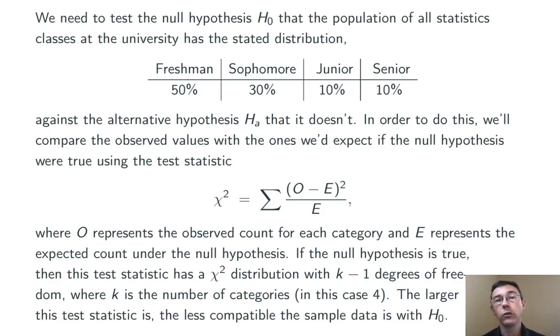Now, if we get a larger test statistic, that's going to indicate that our sample data is less compatible with the null hypothesis, that is, with the hypothesized distribution.